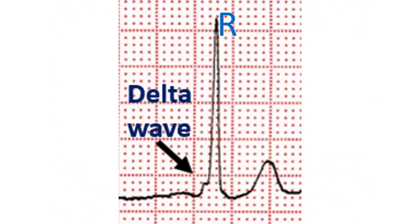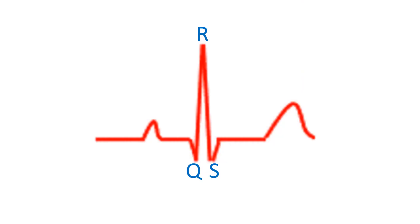Delta waves occur at the onset of the QRS complex, and epsilon waves are seen at the end of the QRS complex in certain pathological conditions. A prominent U wave after the T wave can be seen when blood potassium is low. An initial negative deflection which is part of the QRS complex is called Q wave. An initial positive deflection is named R wave. A second negative deflection, or a negative deflection following an R wave, is called S wave. A second positive deflection will be termed R prime wave. If there is a negative deflection after the R prime, it is called S prime. Waves less than 5 mm amplitude may be designated by small letters.